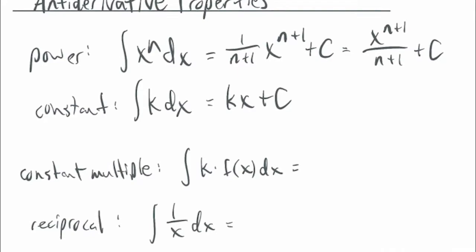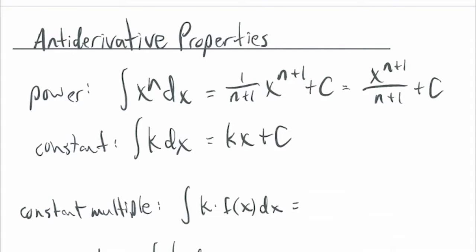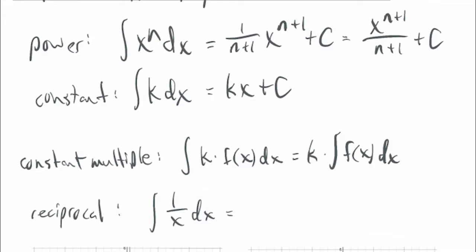How about a constant? The derivative of any linear function mx + b is just m. So since the derivative of a linear function is a number, the antiderivative of a number is a linear function: kx + C. And the constant multiple rule: if you have a multiplier k next to some function, k can just sit out in front — analogous to the constant multiple rule for derivatives. How about the reciprocal rule? What do you start with and find the derivative to get 1/x? That would be ln(x). The derivative of ln(x) is 1/x.